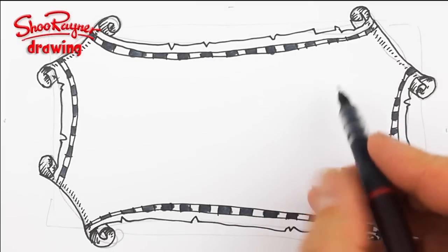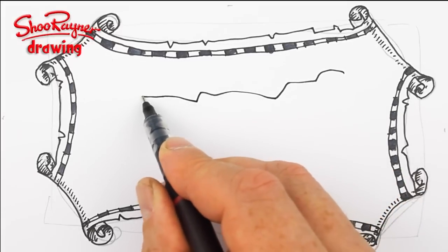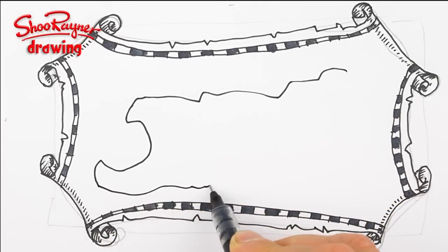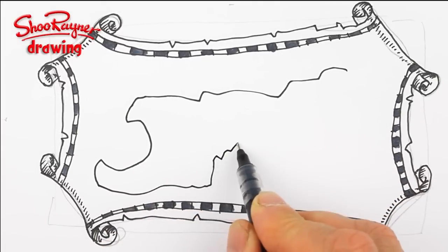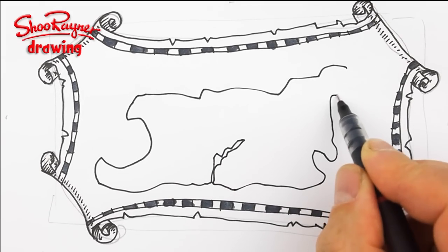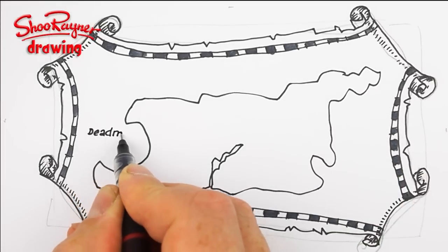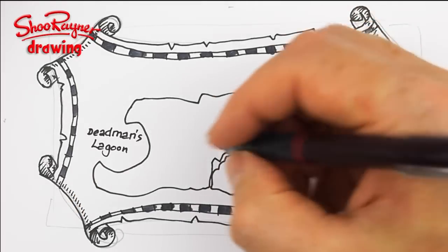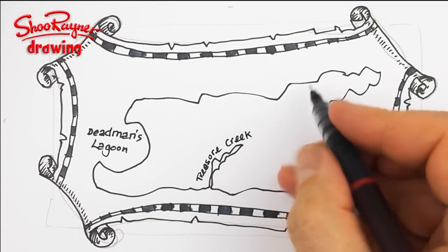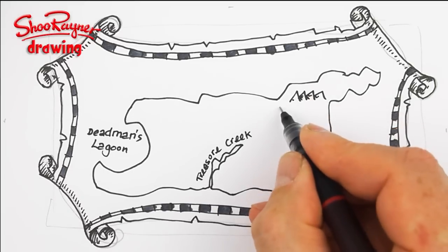You're going to want to put some weird shaped island on there, and then you're going to want a lagoon and a creek or something like that. And something just a little bit strange — a dead man's lagoon and treasure creek.